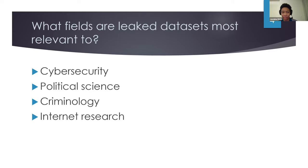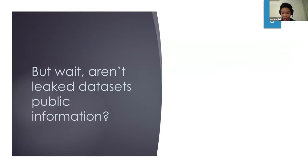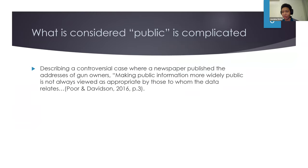The general idea is that you use leaked data to get a more authentic view of what people are doing, since they don't expect to be recorded or watched — you see what they would really do if they thought no one was watching. But aren't leaked data sets public information? First, what is considered public is complicated. For example, a newspaper created a map of where all gun owners lived, and gun owners were not happy about this even though that information was technically public. In general, concepts like 'public figure' have become really confusing in the world of social media.